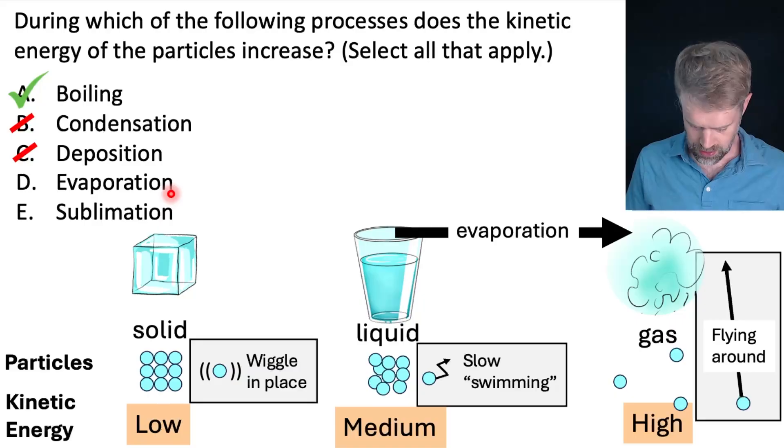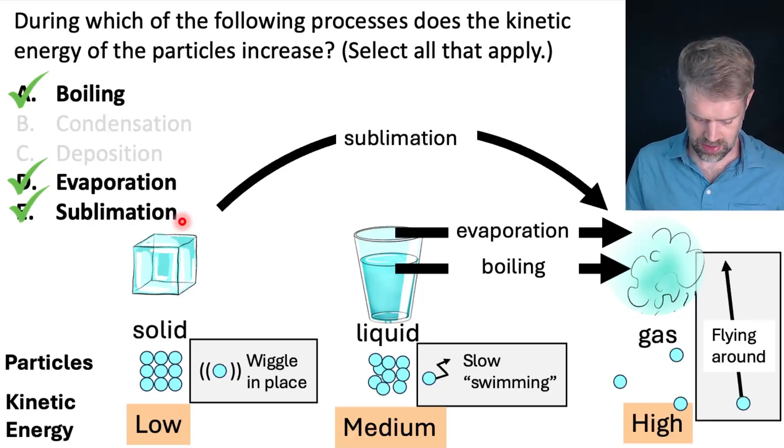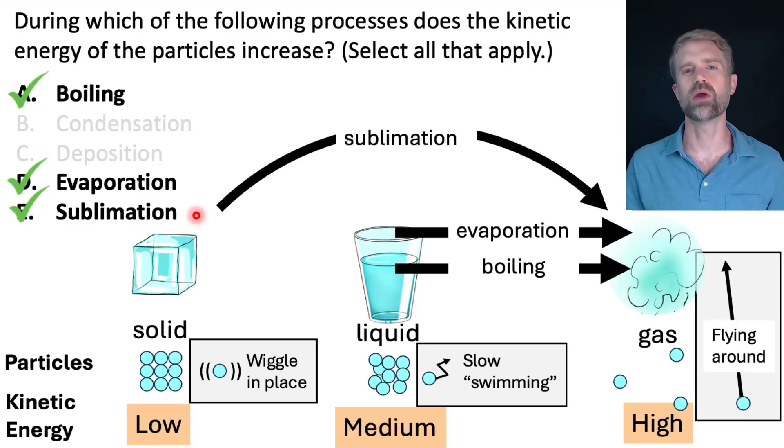Next. Evaporation. Liquid to gas. So kinetic energy of the particles increases medium to high. Choose it. And finally E. Sublimation. Solid directly to gas. No liquid in the middle. Kinetic energy increases a lot from low to high. Choose it. We've got A, D, and E. That's how we get boiling, evaporation, and sublimation.